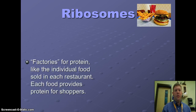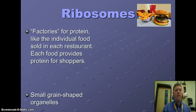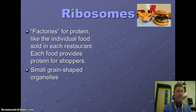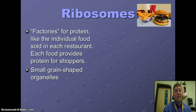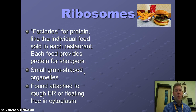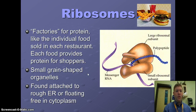What about ribosomes? Ribosomes are factories for proteins. Think of them like the individual food sold at restaurants in the mall — like french fries, hamburgers, hot dogs. Each food provides protein for shoppers, and that's what ribosomes do: they're factories for protein. They are small grain-shaped organelles found attached to the ER or floating in the cytoplasm.